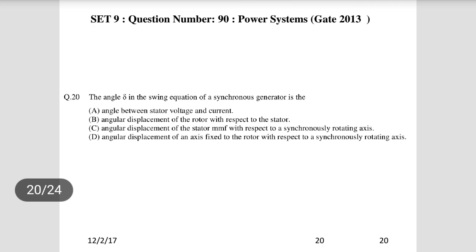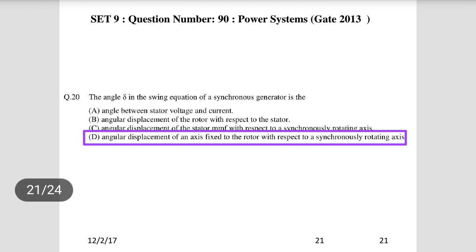Tenth question: in the swing equation of a synchronous generator, the angle δ is the angular displacement of the axis fixed to the rotor with respect to the synchronously rotating axis. This is normally called the power angle.